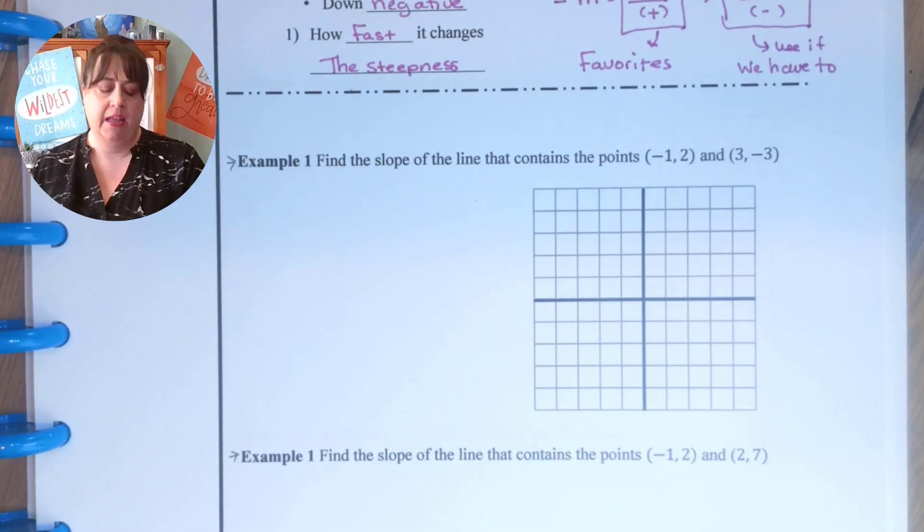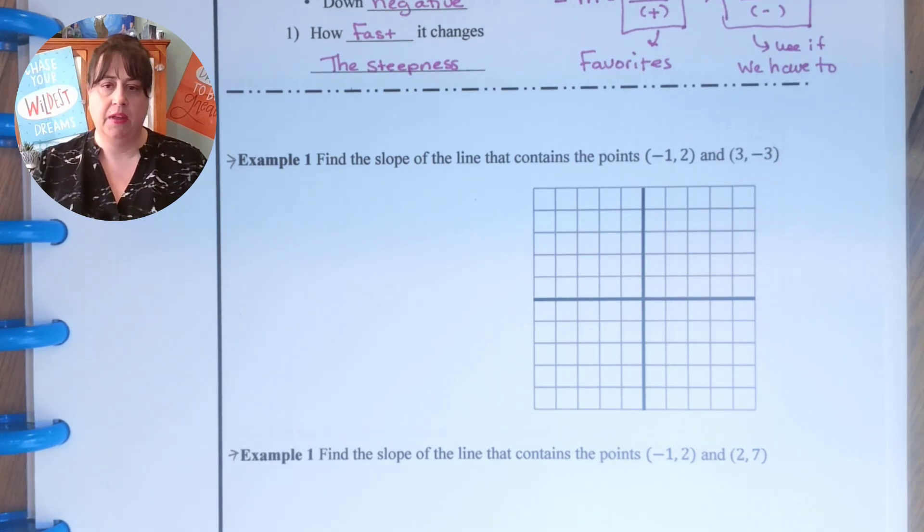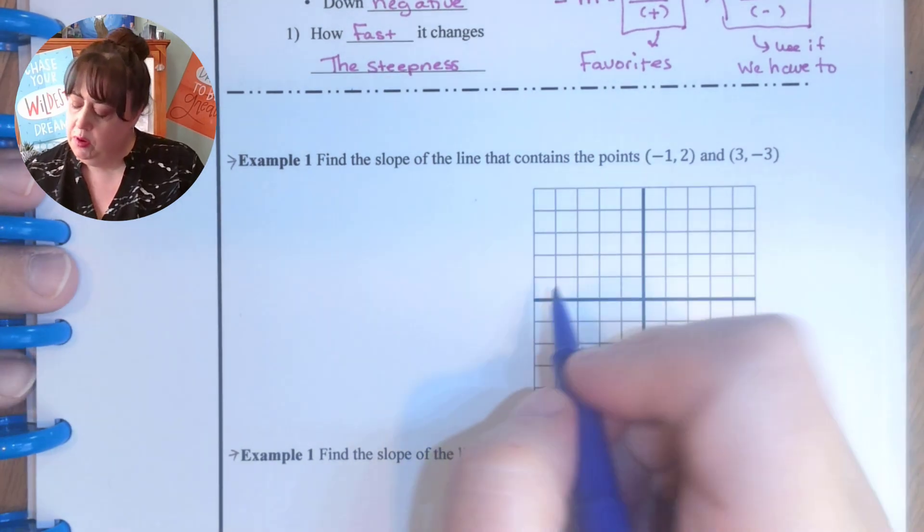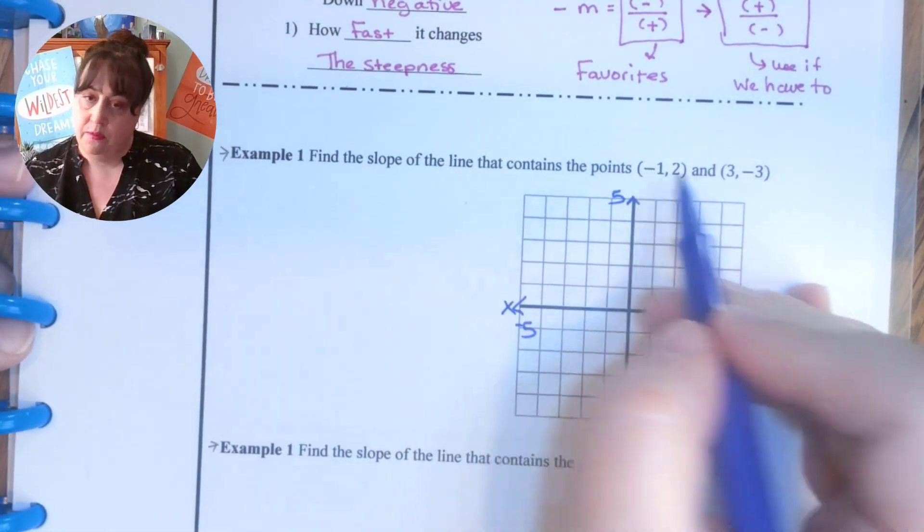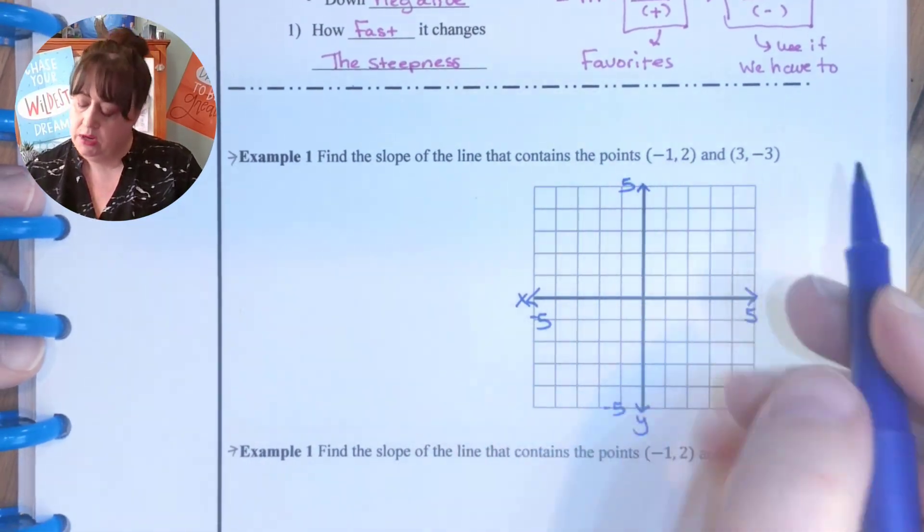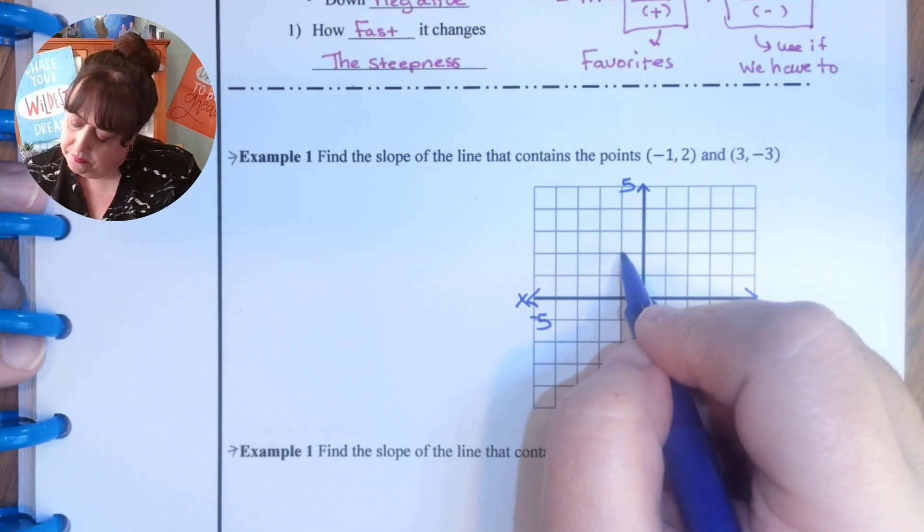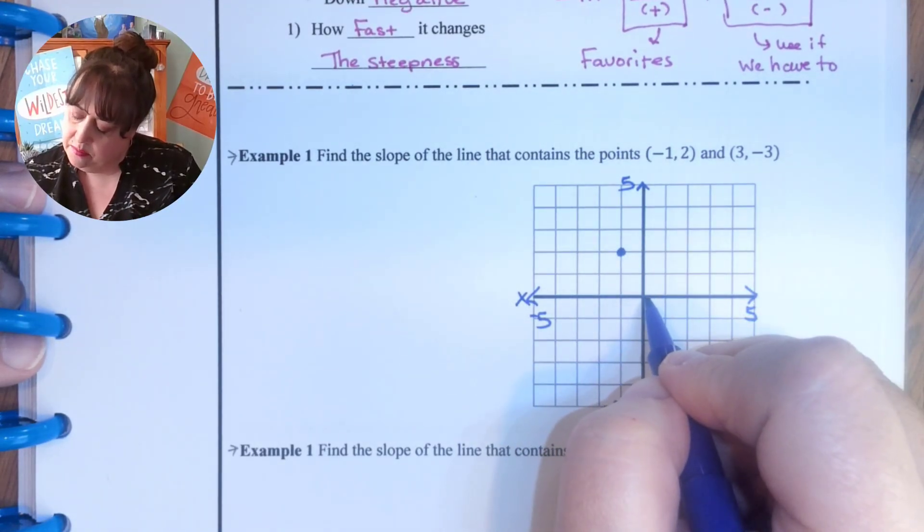So let's look at our first example of slope. Remember x's and y's need to be on there and we're going to graph the point negative one, two and three, negative three.